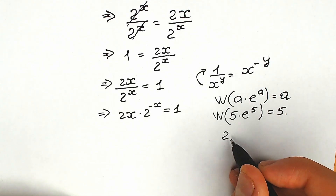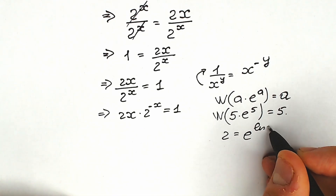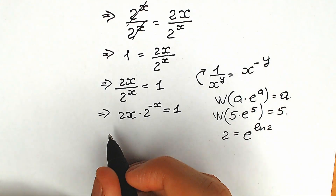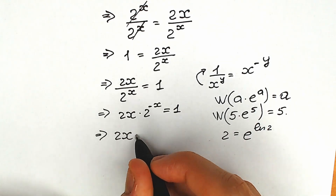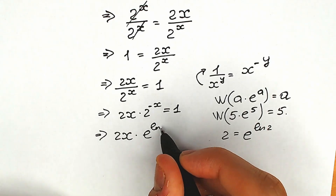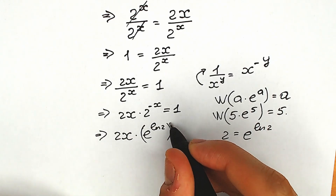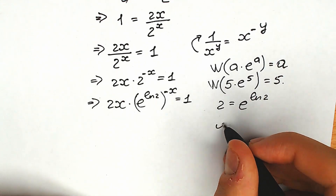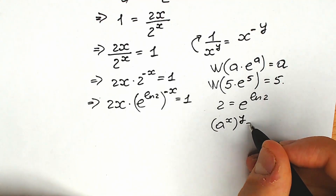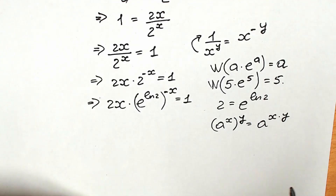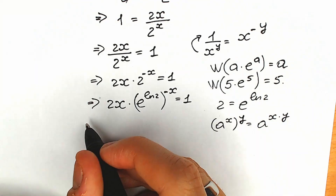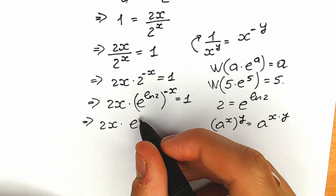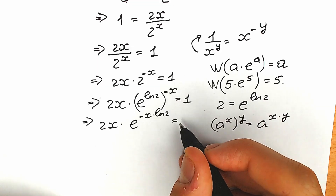Right here we don't have e, so let's try to create the right expression. Instead of 2, I suggest writing e to the power natural log 2, because it helps us create e. So plugging in e to the power natural log 2, and don't forget the minus x: we have 2x times e to the power natural log 2, to the power minus x, equal to 1. Applying the exponent multiplication rule, we get 2x times e to the power minus x times natural log 2, equal to 1.